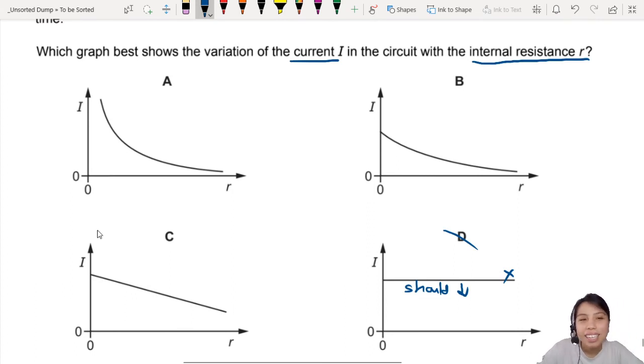So, first thing. I don't think C is correct because it's supposed to be a curvy, supposed to follow the 1 over x kind of graph shape. So it's not this one already. Not straight. Not linear, I should say. And between A and B, they are both following the shape of y proportional 1 over x. That kind of graph. But the intersection makes a difference.